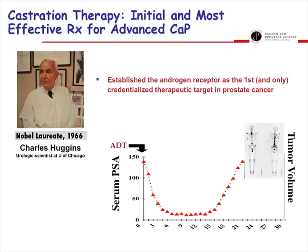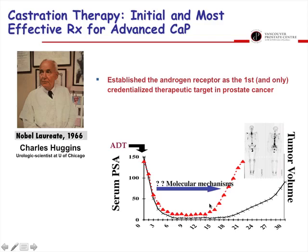The AR is clearly a pro-survival signal and an oncogene driving prostate cancer carcinogenesis and progression. It was the first credentialized therapeutic target in prostate cancer and arguably the first molecular target in all of oncology — work that led to Charles Huggins' Nobel Prize in the 1960s. There were excellent responses, but these were not necessarily durable and invariably led to castrate resistance.